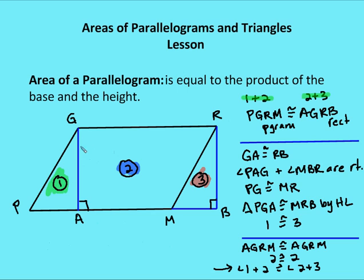Let's talk about how we know that the area of a parallelogram is the base times the height. What we're going to do is draw a line from R to B, where B is an extension of the base PM. So I extend PM through B, such that RB is perpendicular to the extension through PM. What I want to prove is that region 1 plus 2, which is the parallelogram, is equal to the rectangle 2 plus 3. We're trying to prove that the area of the parallelogram is base times height — the same as the area of a rectangle.